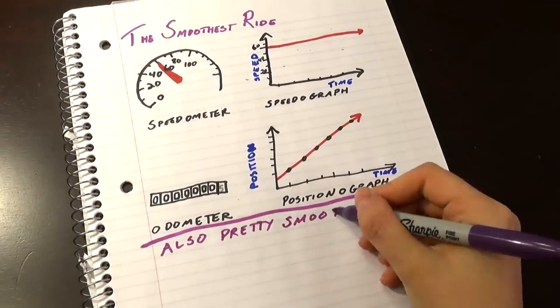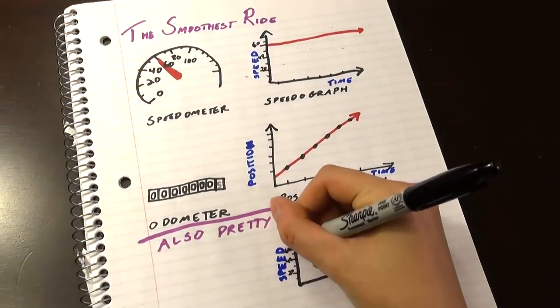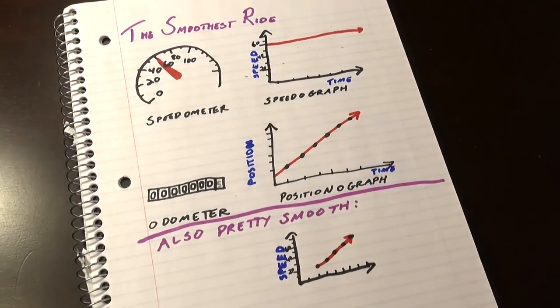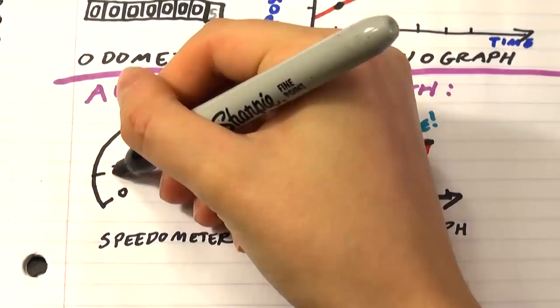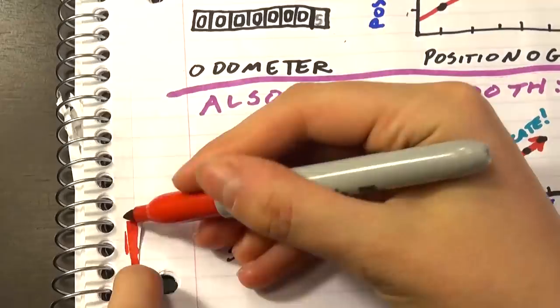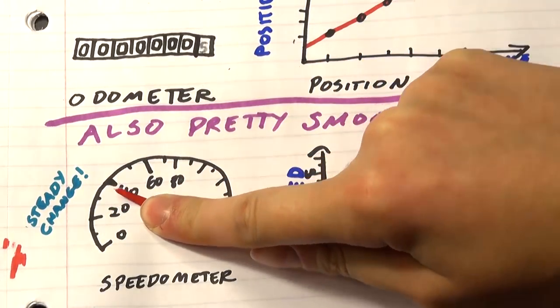You can have a nice smooth acceleration or deceleration too. Like when you're getting up to speed on the highway, you might hit the gas, which doesn't feel so smooth, but then you can accelerate smoothly so that your speed increases the same amount every second, the speedometer climbing steadily.